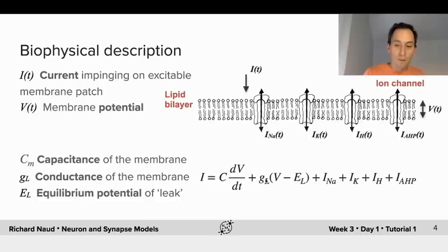And you see here, I've used GL for the conductance, the leak conductance of the membrane, EL for the equilibrium potential or leak potential of the membrane, and C for the capacitance of the membrane.